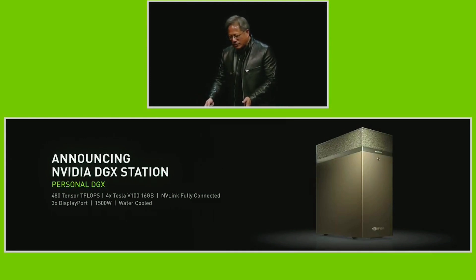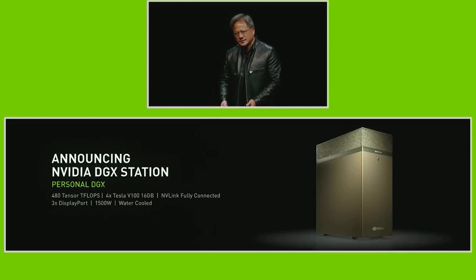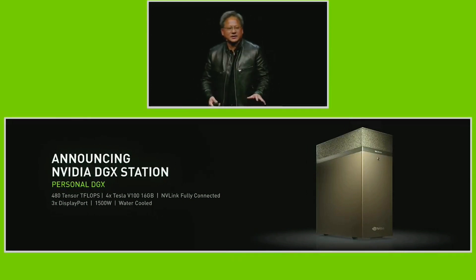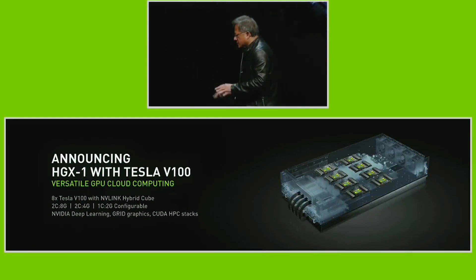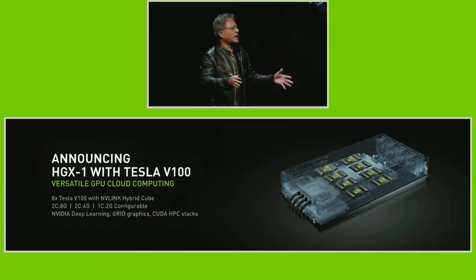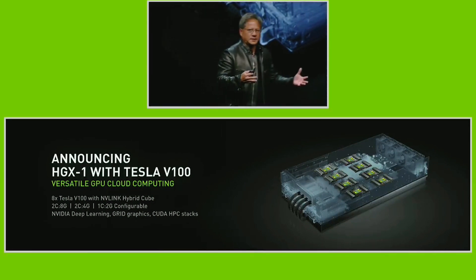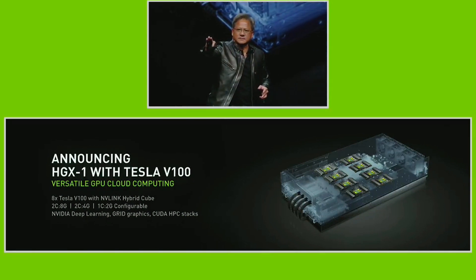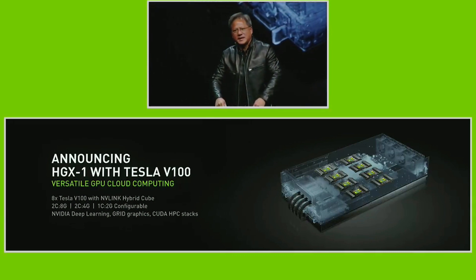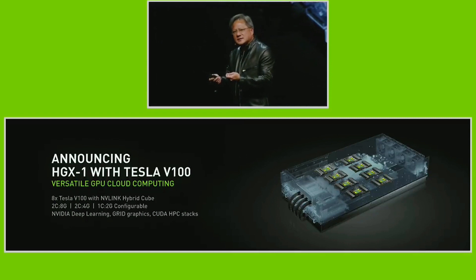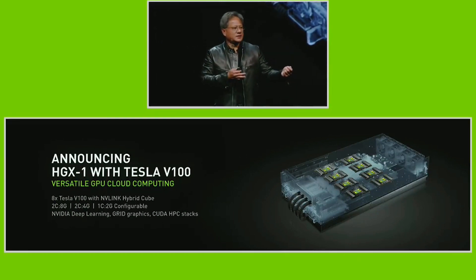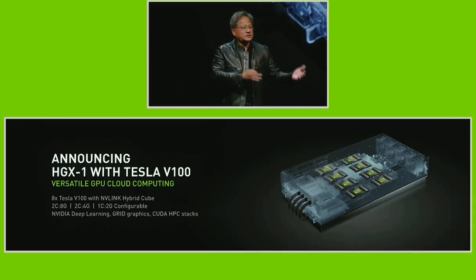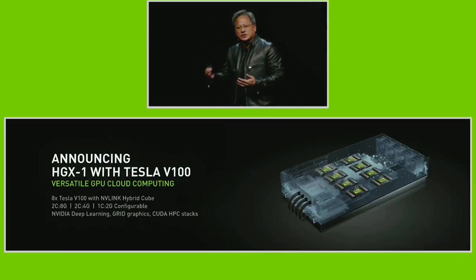Putting that much computing power next to an engineer, you really have to keep it quiet, so we liquid-cooled it — and it's whisper quiet. One of the things we did was partner with Microsoft to create the industry's first industry-standard hyperscale cloud graphics accelerator, the HGX1. There's a 1U computer underneath the server with four cables connecting to the HGX1 via PCI Express, allowing us to configure the server as two CPUs and eight GPUs, two CPUs and four GPUs, or one CPU and two GPUs — provisioning all kinds of different-size services. We can also virtualize the GPUs so that many instances can run on one GPU.